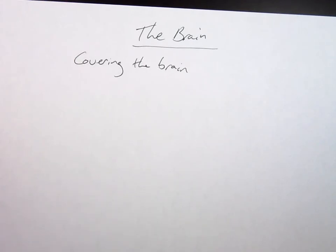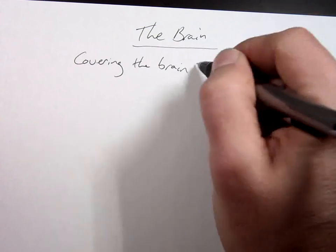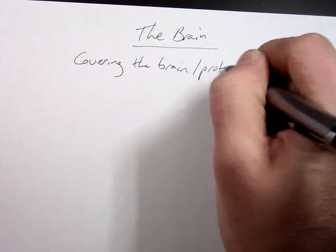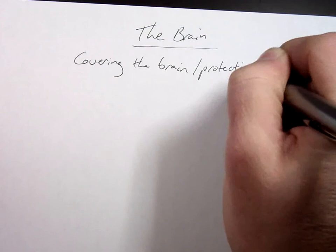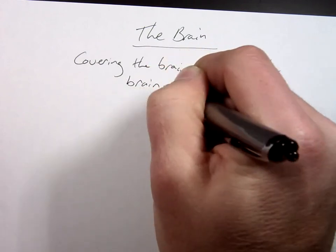So we're starting with the brain here and first we're going to talk about what covers the brain, what covers or protects the brain, and there are basically three things.